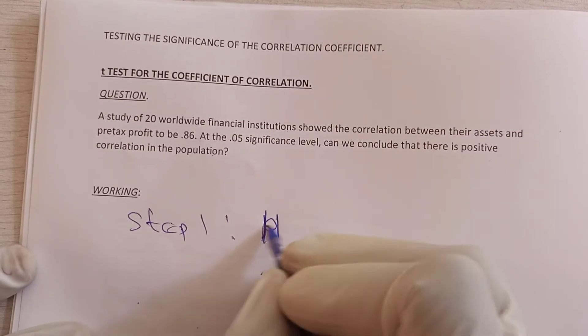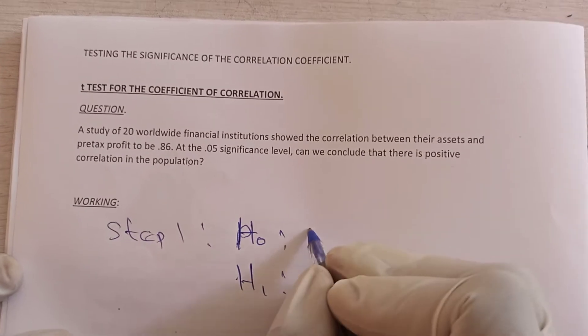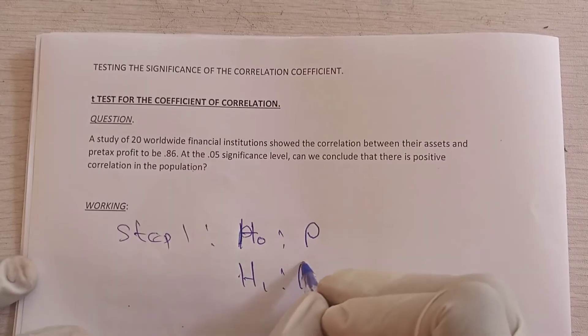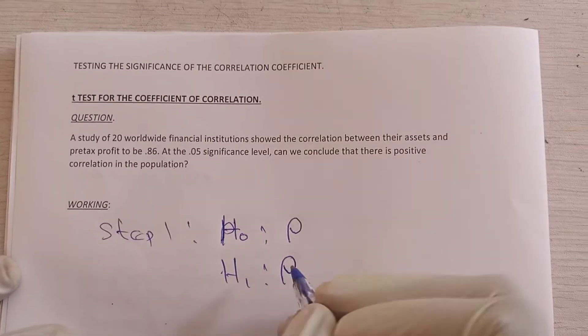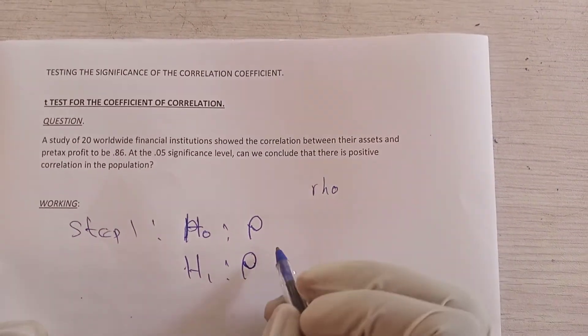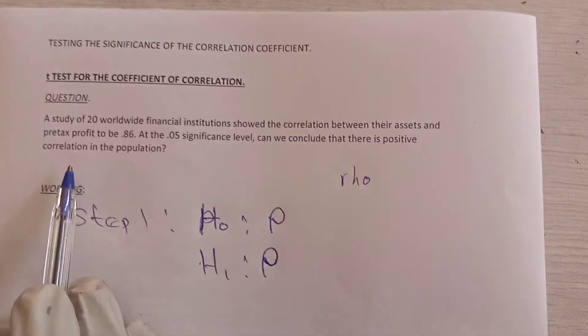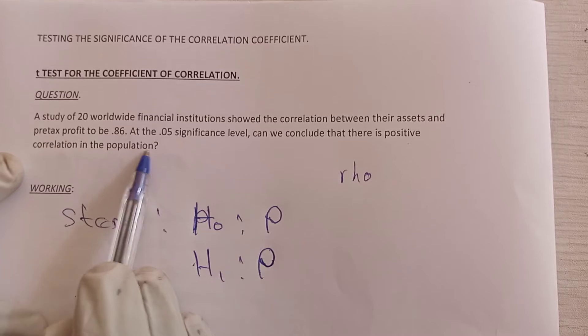You state the null hypothesis and the alternative hypothesis. Now here we use rho because you are testing for correlation coefficient. We use rho. It looks like P, it's spelled R-H-O. Now let's see, they said can we conclude that there is a positive correlation in the population?